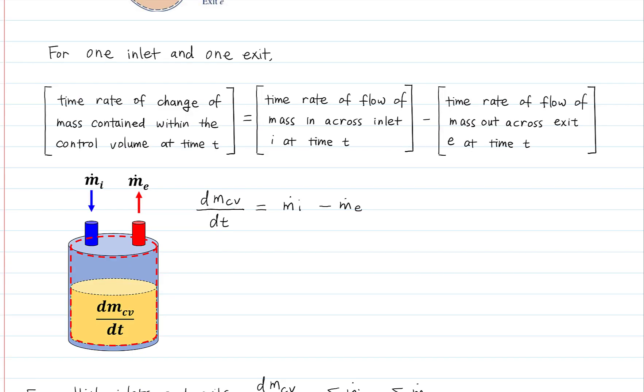Mass conservation may be expressed in mathematical form. M-dot denotes the mass flow rate. It is the amount of mass flowing through a cross-section per unit time. The physical meaning of each term is described here. dMcv/dt denotes time rate of change of mass contained within the control volume at time t. M-dot-i is time rate of flow of mass in across inlet i at time t. M-dot-e is time rate of flow of mass out across exit e at time t.